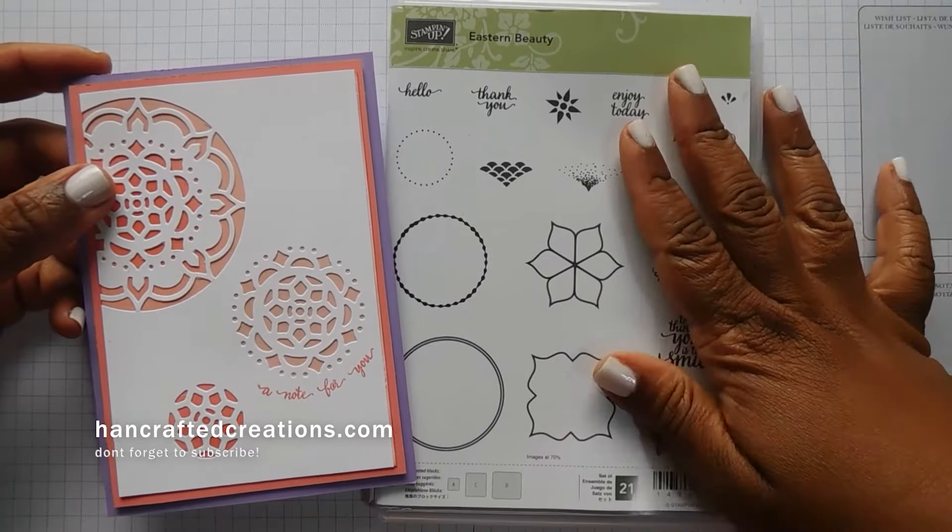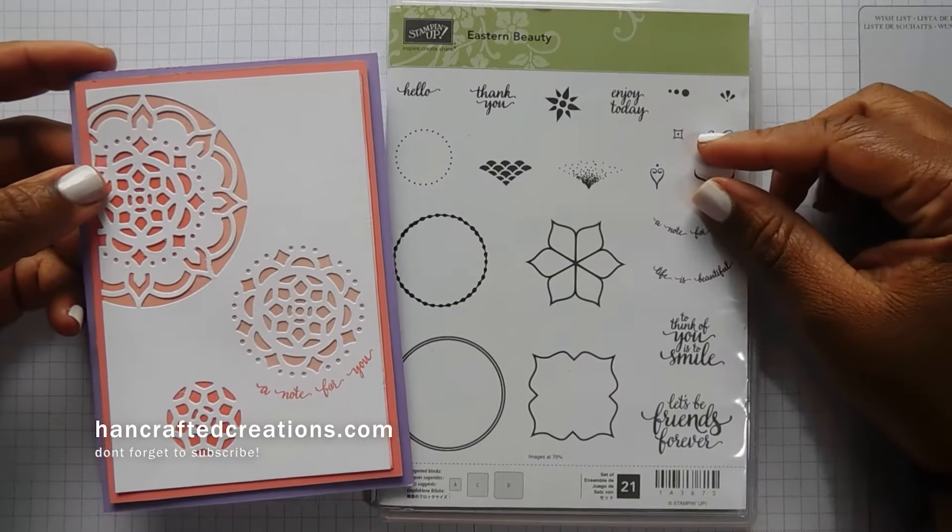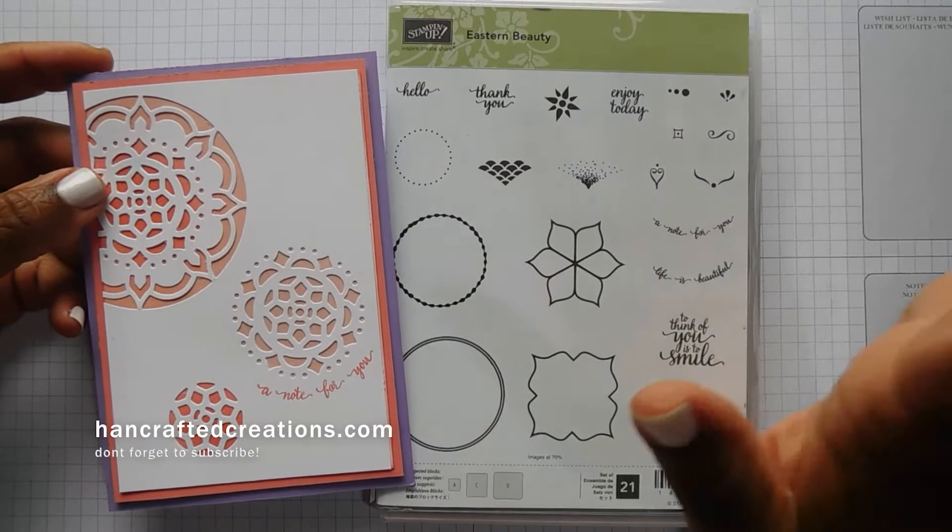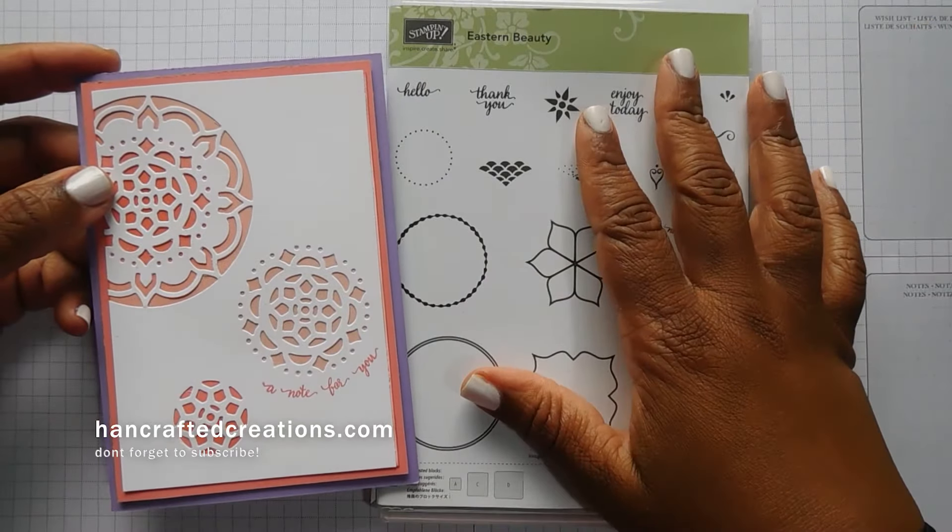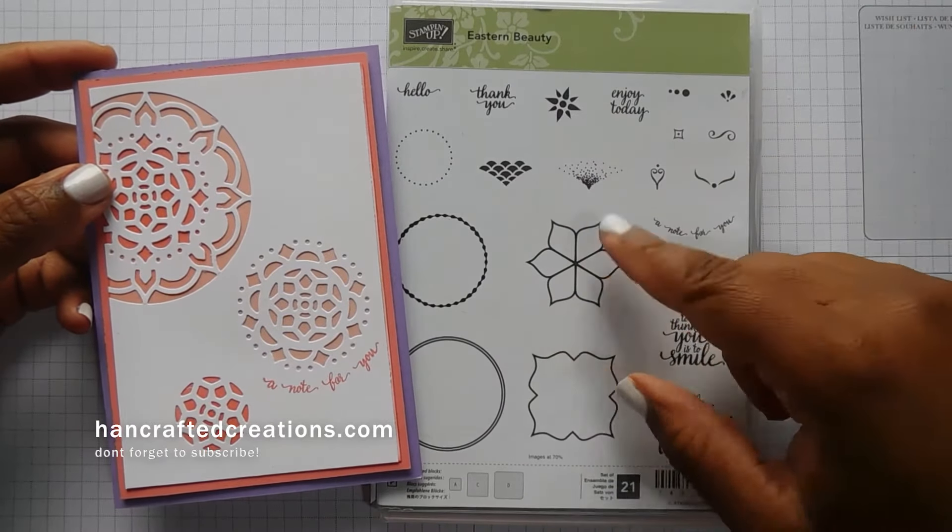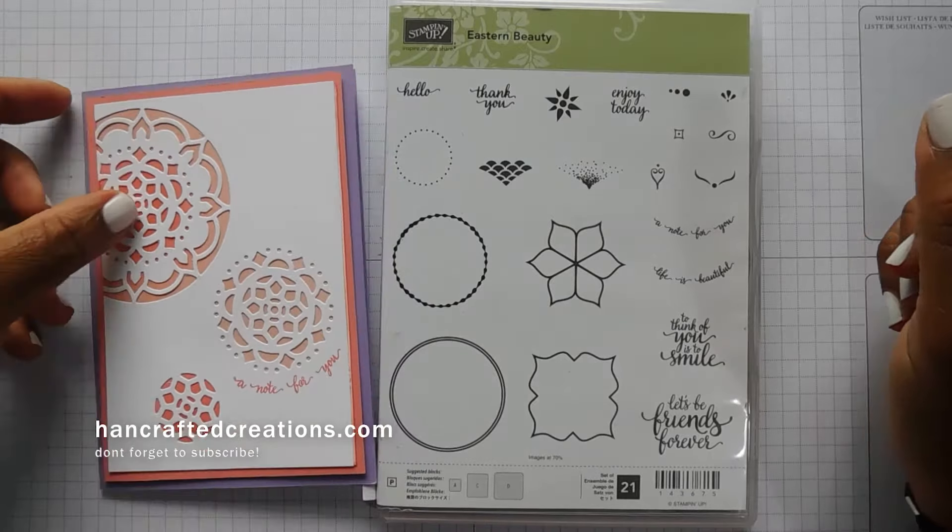This is the card that I'm going to be showing you how to make today. We're going to be using the Eastern Beauty stamp set along with the coordinating dies. So if you're new to my channel then please subscribe so you don't miss any tutorials and we will get started.